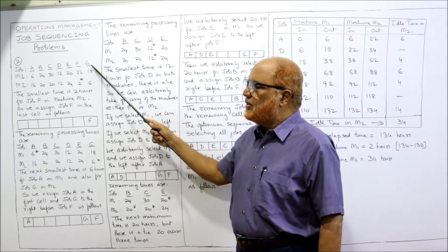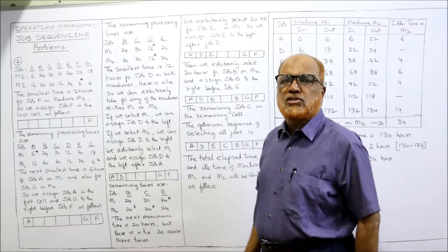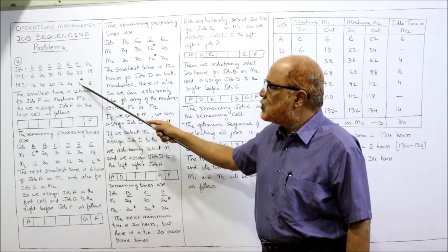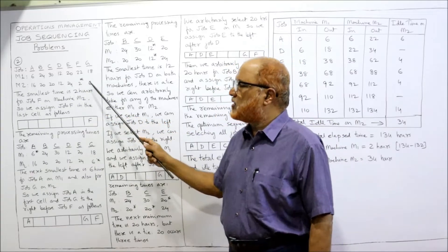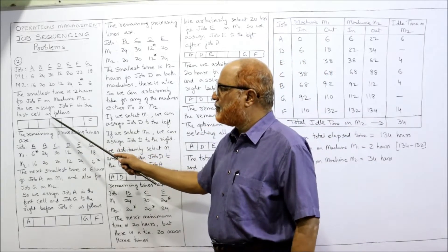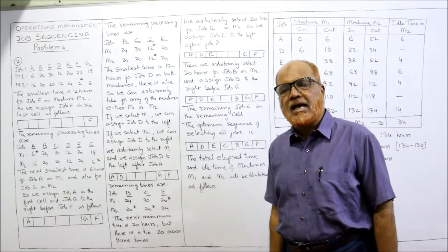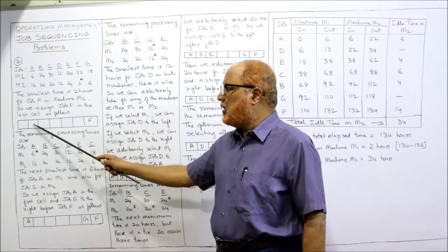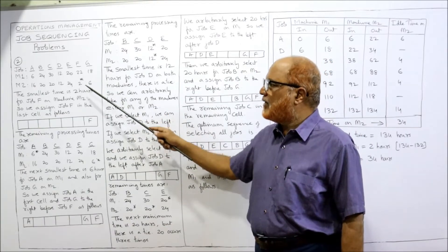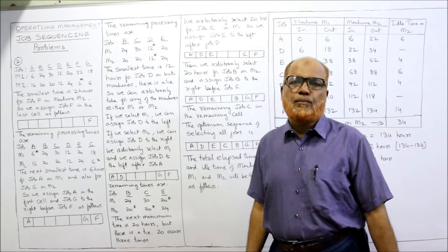Jobs are A, B, C, D, E, F, G with given processing times. The smallest processing time is 2 hours — I have marked it with an asterisk. This is for job F on machine M2. Since it is on M2, we assign from the right. We make seven boxes and place job F in the last cell. Job F is now finished and will not be considered further.